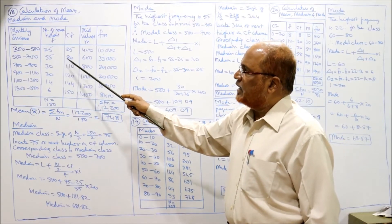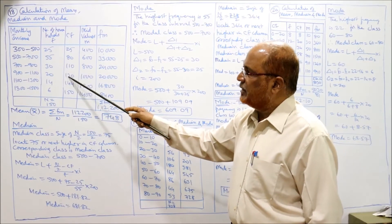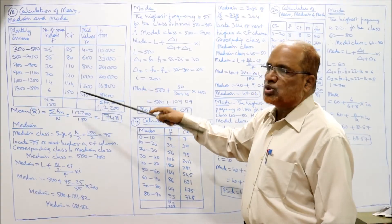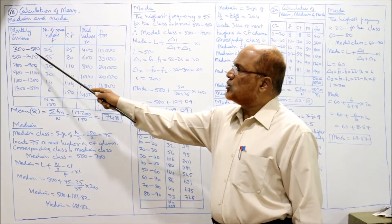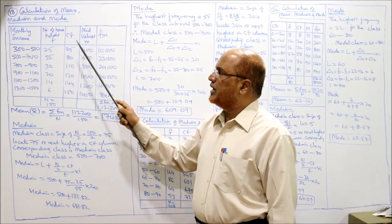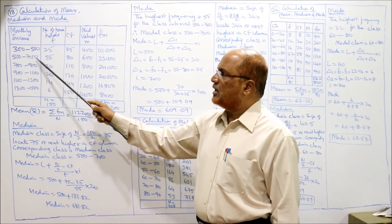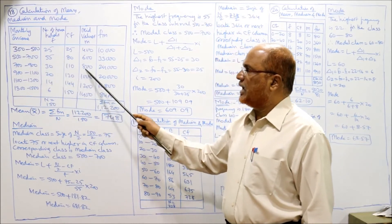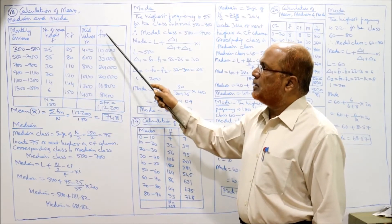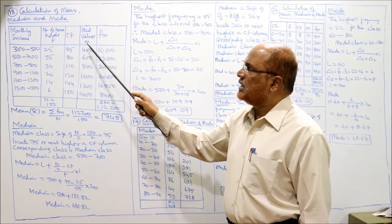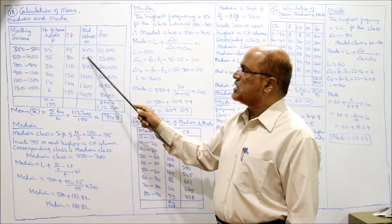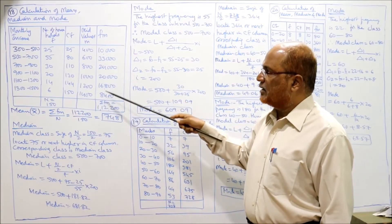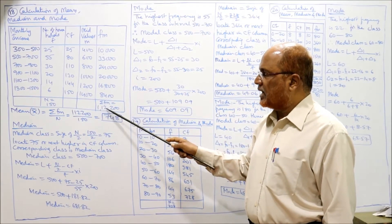Cumulative frequencies: 25, 25+55=80, 80+30=110, 110+30=130, and so on. Mid values are required for calculating the mean: (300+500)/2=400, (500+700)/2=600, (700+900)/2=800, and so on. Now multiply frequency into mid value (FM): 25×400=10000, 55×600=33000. The total ΣFM is 1,12,200.